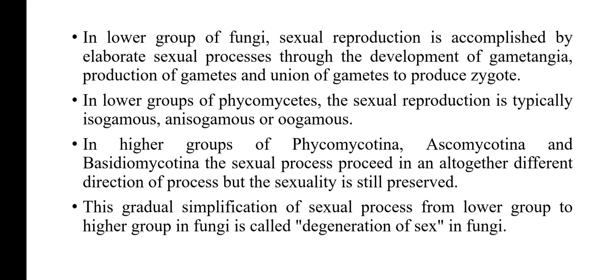First of all, what is degeneration of sex? Degeneration of sex means gradual simplification of sex organs or sexual cycle from lower to higher groups of fungi. In lower groups of fungi, sexual reproduction is accomplished by elaborate sexual processes — that is, through the development of gametangia, production of gametes, and union of gametes to produce a zygote.